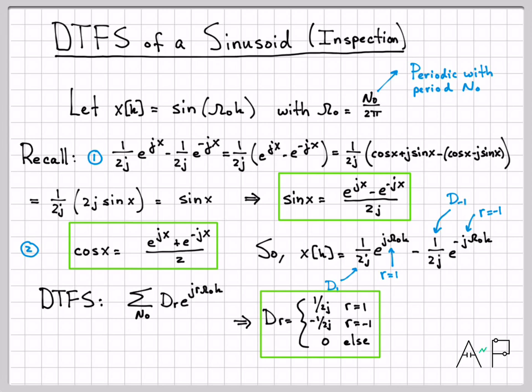So that's an example of finding the DTFS of a signal via the what I call the inspection technique. Basically, if you're lucky enough to be given a signal that consists of sines and cosines, just go ahead and use Euler identities and trig identities like this to directly manipulate the signal into a weighted combination of complex exponentials. Once you've done that, just pick off the numbers right here and compare it to your equation, and you can figure out what all of the non-zero DTFS coefficients are.